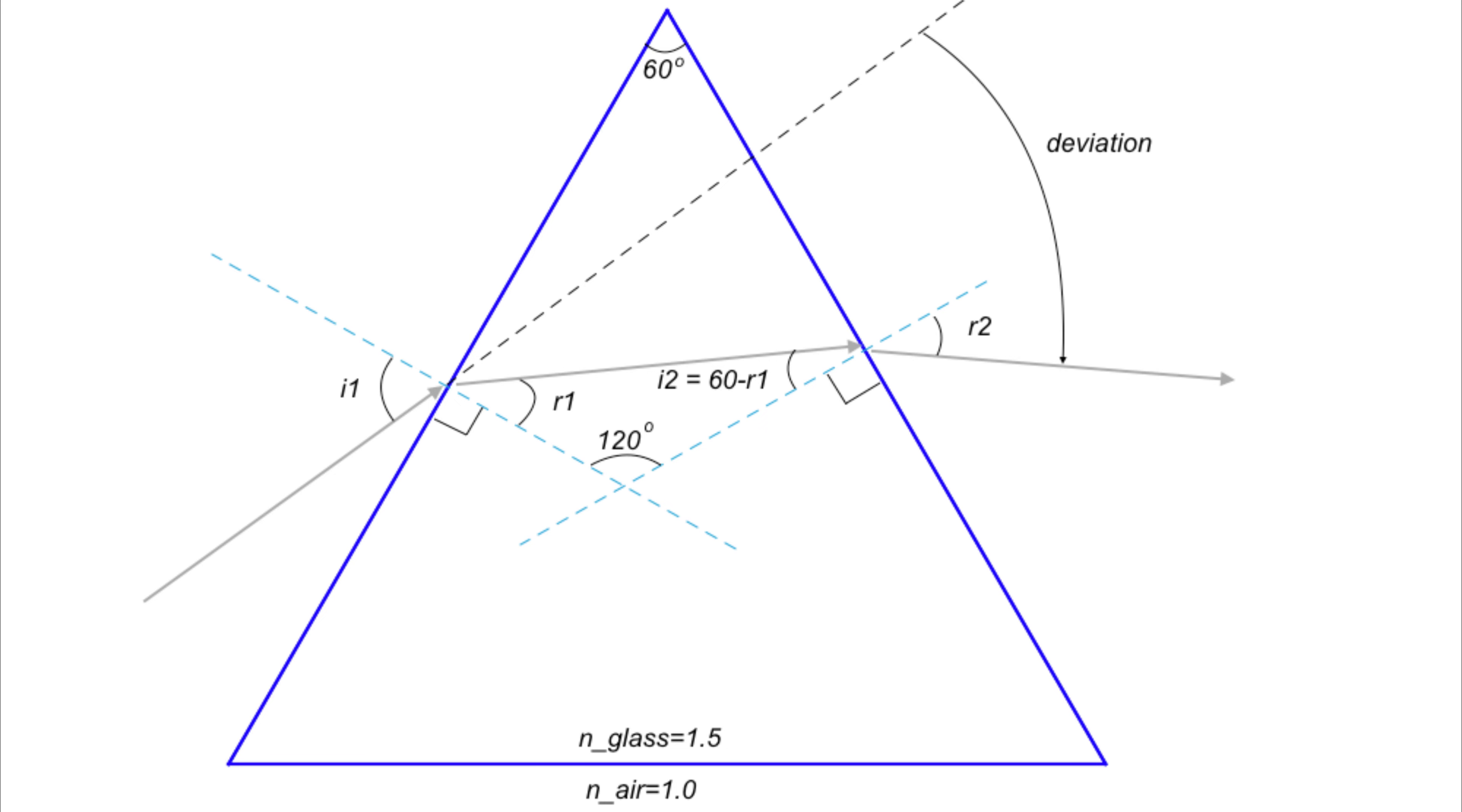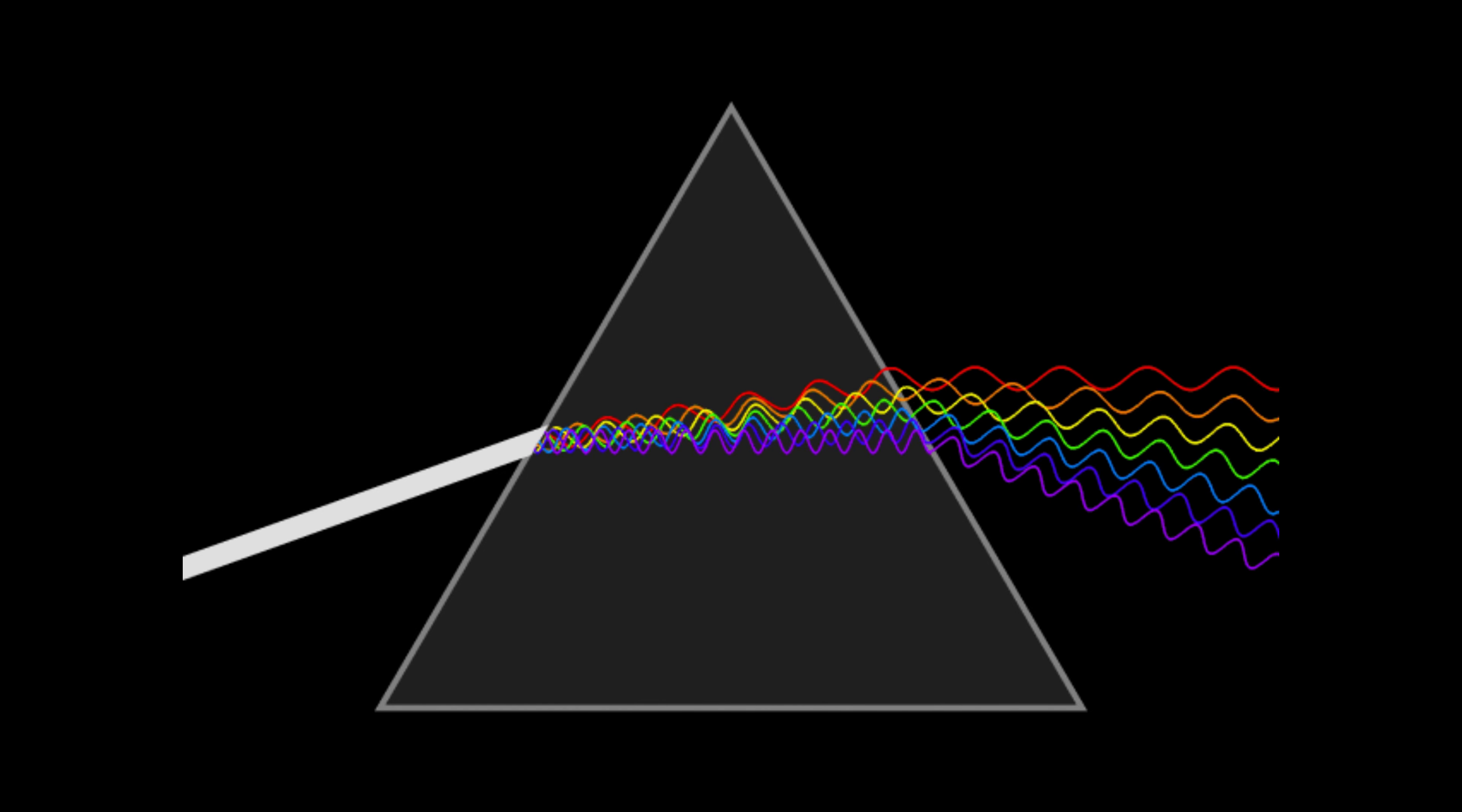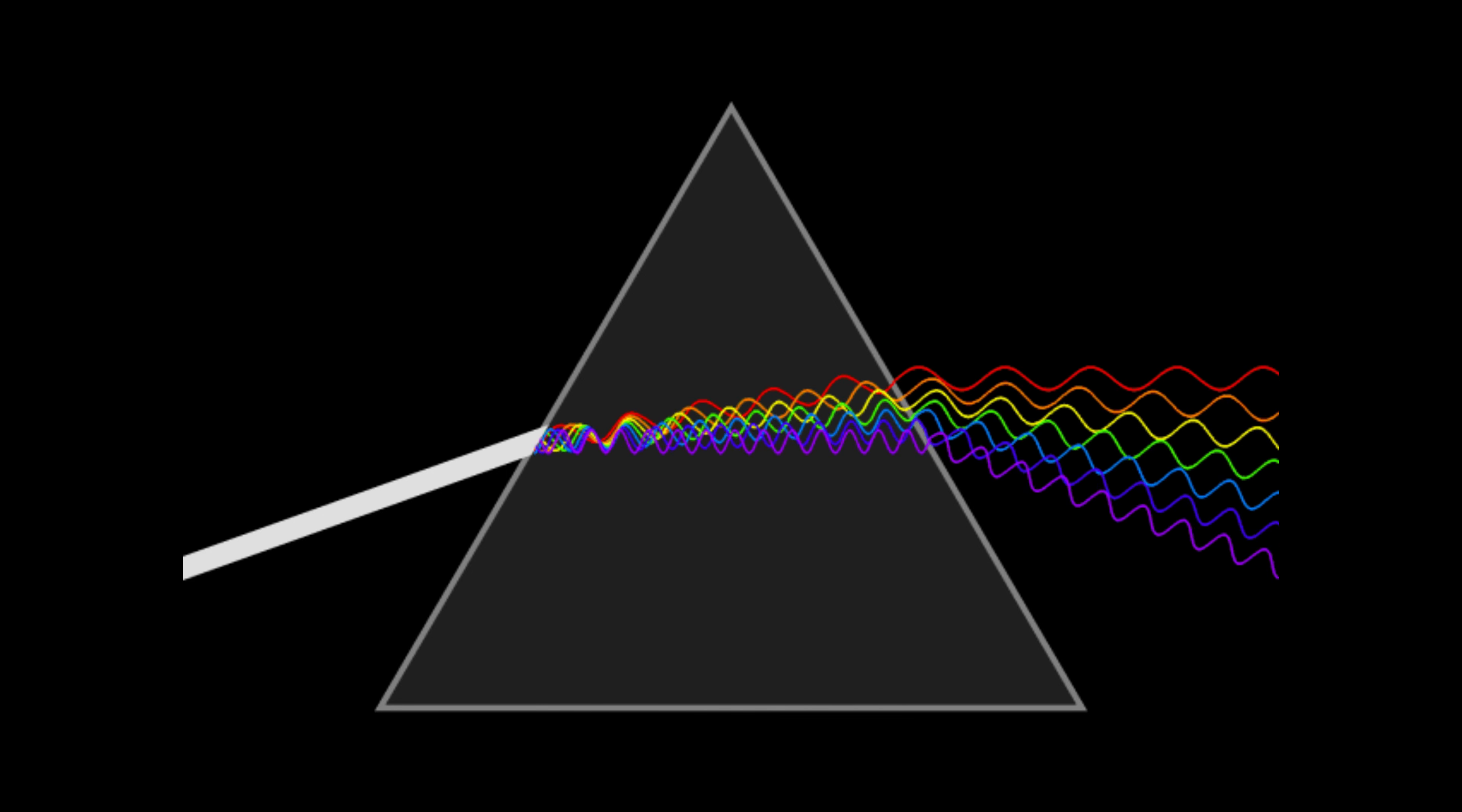Consequently, the light waves with the least energy, such as red, refract the least, while those with the most energy, such as violet, refract the most. This phenomenon results in the dispersion of light into a spectrum of colors, creating a rainbow effect.